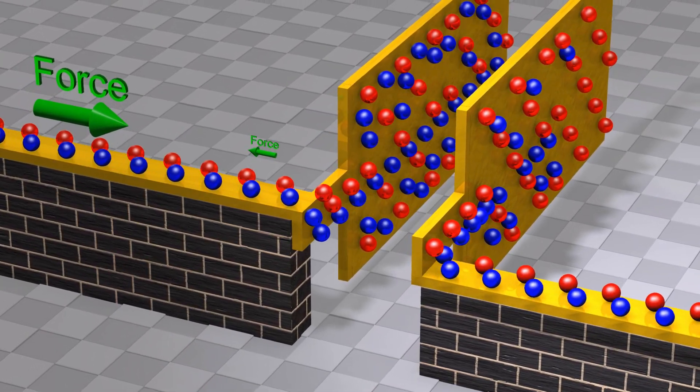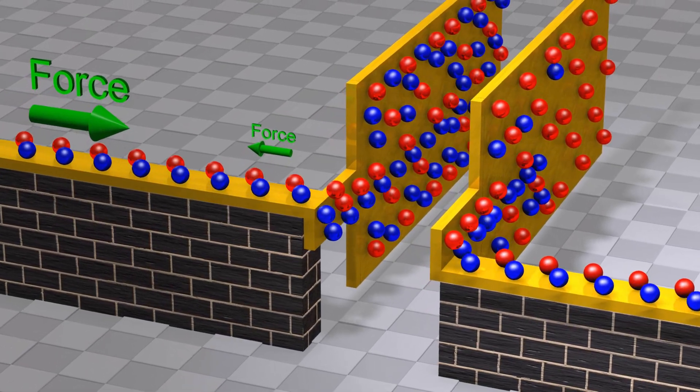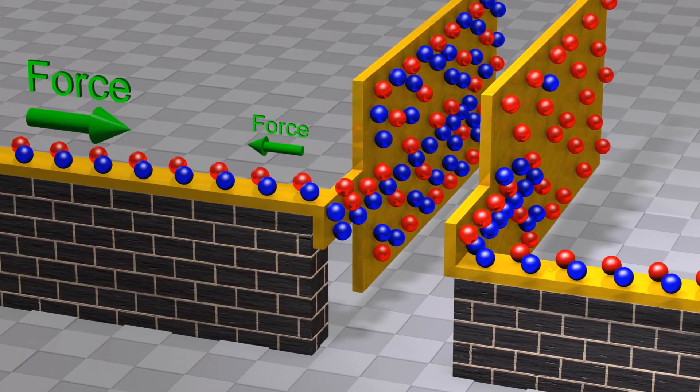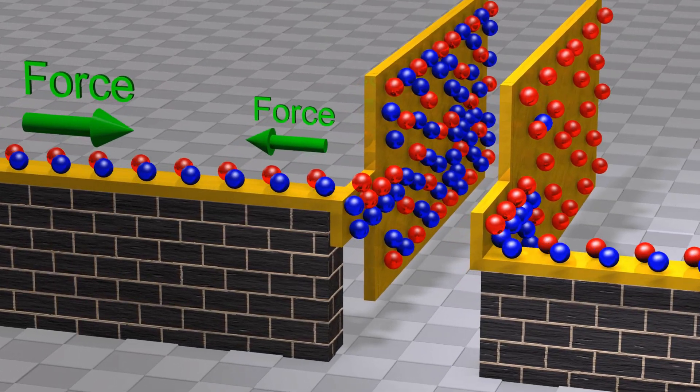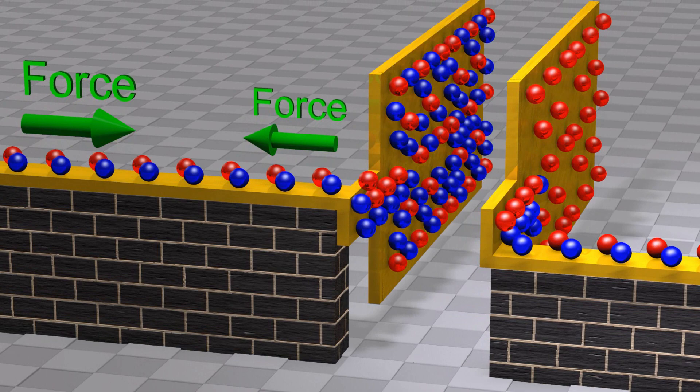Whereas mathematical equations can take any value, the physical systems they describe cannot. This is where our mathematical models break down.